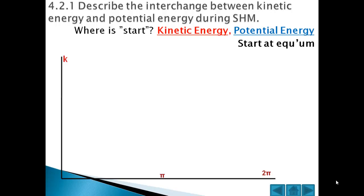Half a cycle later it will have moved to one side and come back again, so it will actually be in the same place. Then one half cycle after that it will be in the original place again. So basically after pi radians it will be back, and after two pi radians it will be back in the same place at the equilibrium position.